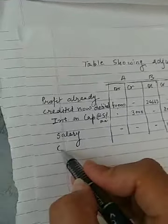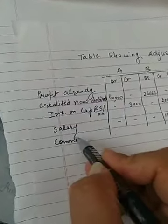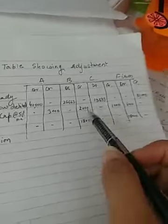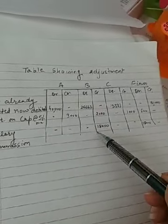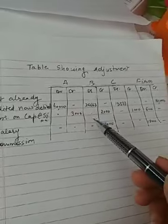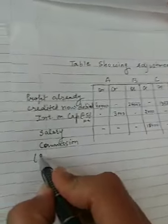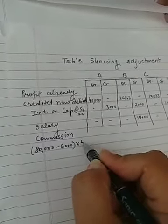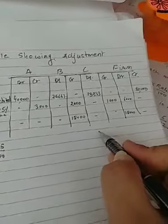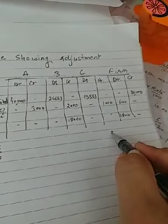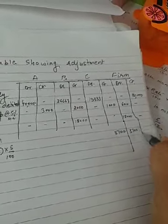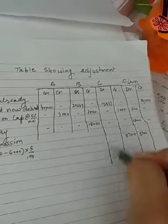Iske baad C ko commission provide karna hai. C ko jo commission dena hai woh salary se pehle lekin interest on capital ke baad ke profit par dena hai. 80,000 ka profit given hai — woh dono (salary aur IOC) se pehle ka hai, it means salary se pehle toh hai hi. Lekin interest on capital charge karne ke baad dena hai: 80,000 minus 6,000 (total IOC) = 74,000; iska 5% = 3,700 C ke credit mein, aur firm ke debit mein 3,700.